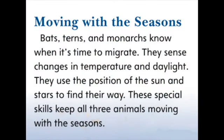Moving with the seasons: bats, terns, and monarchs know when it's time to migrate. They sense changes in temperature and daylight. They use the position of the sun and stars to find their way. These special skills keep all three animals moving with the seasons.